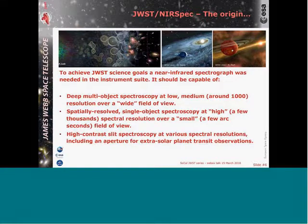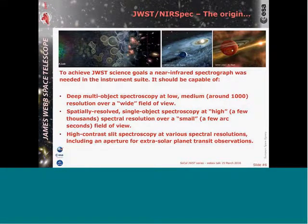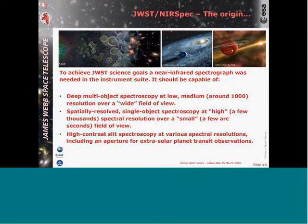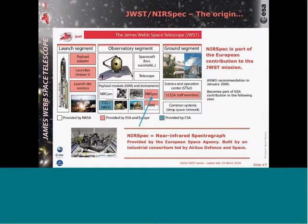That was obvious at the beginning. For NIRSpec — near-infrared spectroscopy — what was found is that we needed something capable of multi-object spectroscopy over a fairly wide field of view, a capability for single-object spectroscopy of spatially resolved objects with a small field of view, and high-contrast spectroscopy at various spectral resolutions. These initial requirements shaped what became NIRSpec — a near-infrared spectrograph provided by the European Space Agency, part of the European contribution to the JWST mission.